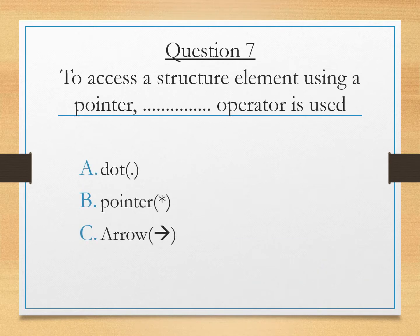To access a structure element using a pointer dash operator is used. Dot pointer or arrow. When we define a structure and we declare an object. To access the members we use a dot operator. Pointer is used for the reference type. and arrow is used when you want to access an element using the pointer so answer will be C arrow.